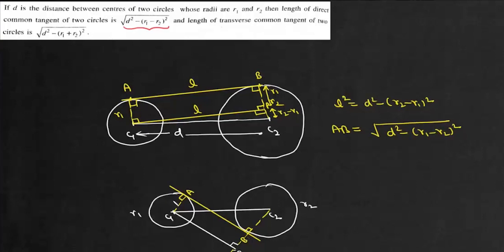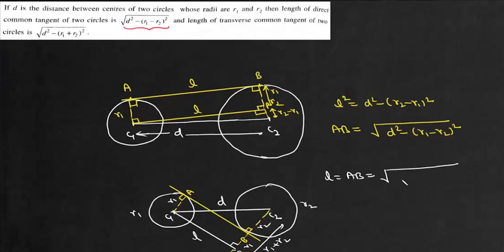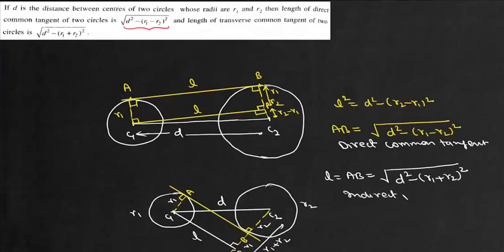From c1 again we draw a line parallel to AB, and suppose this point is P. This angle is 90°, this is r1, this is r1, and this is r2, so PC2 is r1 plus r2. The distance between centers is d. This AB equals l, so from here we can write l = √(d² − (r1 + r2)²). So this is the length of the direct common tangent, and this is the length of the indirect or transverse common tangent.